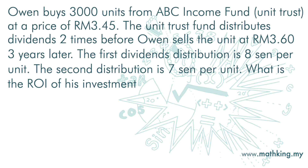Owen buys 3,000 units from ABC Income Fund at a price of RM3.45. The unit trust fund distributes dividends two times before Owen sells the units at RM3.60 three years later. The first dividend distribution is 8 cents per unit and the second distribution is 7 cents per unit. What is the ROI of his investment?